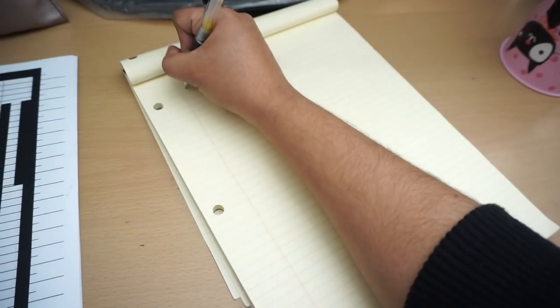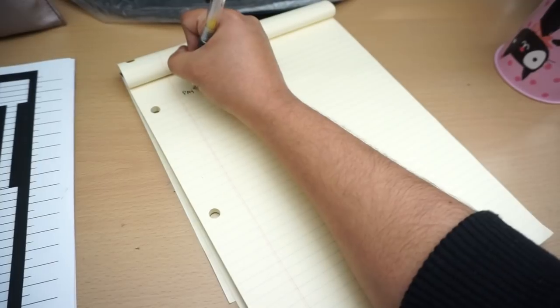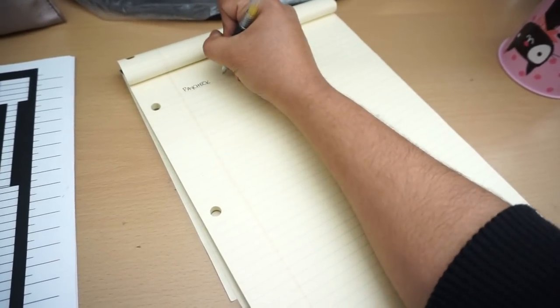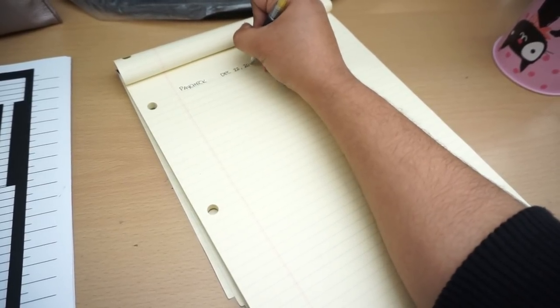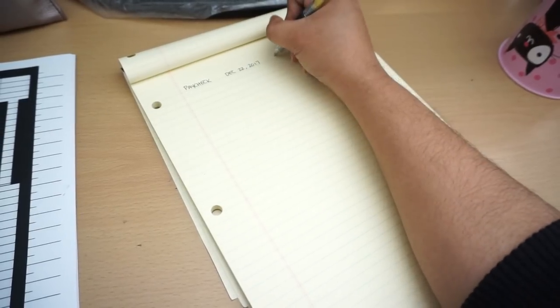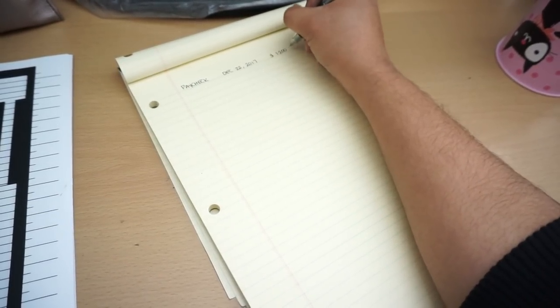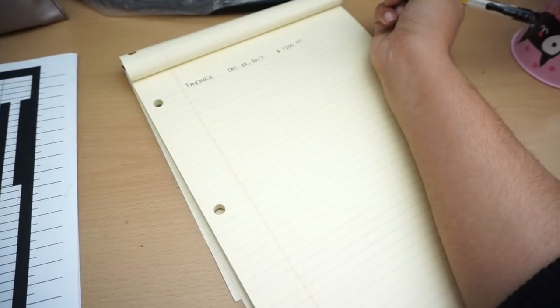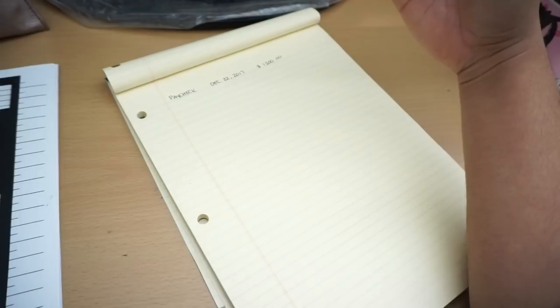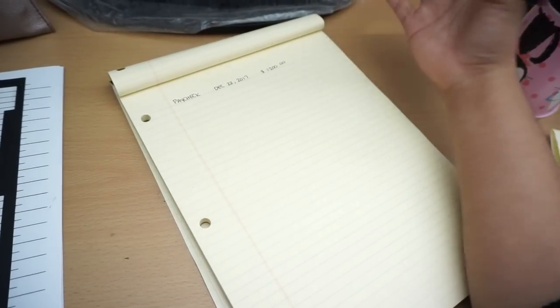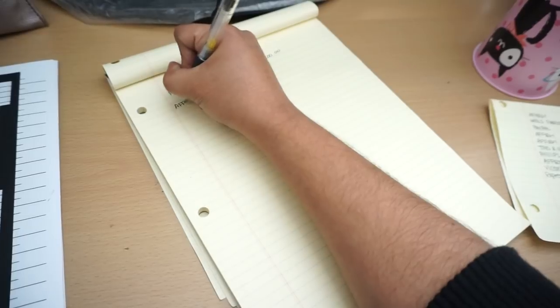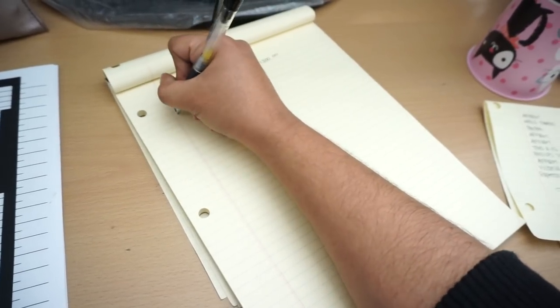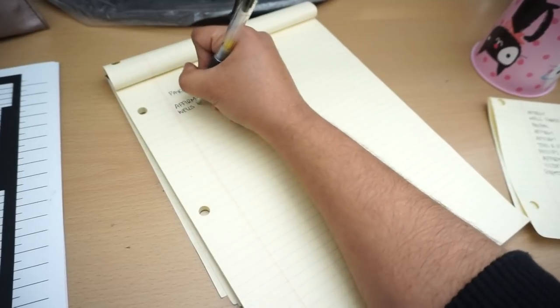So this is going to be my first paycheck which I'm going to receive on the 22nd which is this Friday. That's why I am doing this. And I usually estimate $1,200 every paycheck because that's what I know I'm going to get. If I get anything extra then I'll add it to my debt snowball. So I'm just going to list my bills first.